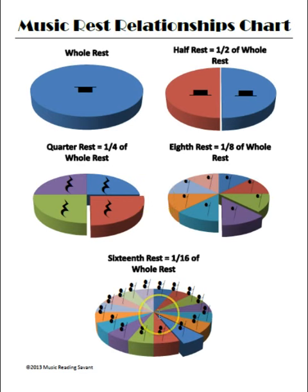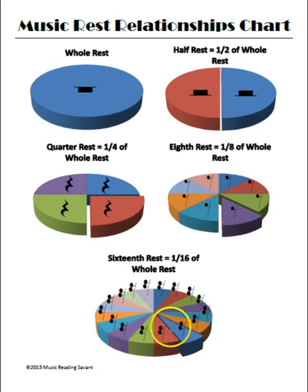When we look at the sixteenth rests, we need sixteen of them in order to equal a whole rest. One piece of that pie is one out of sixteen, or one-sixteenth — that's why it's called the sixteenth rest.